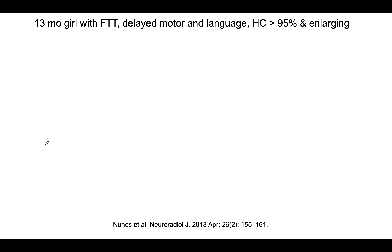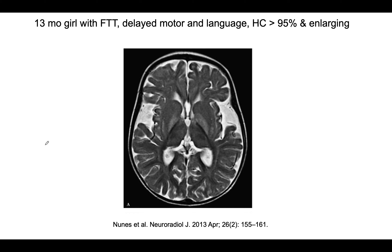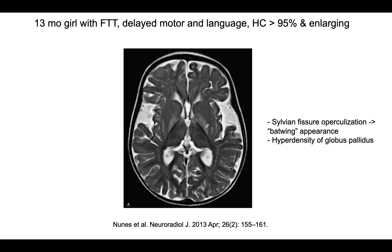As a case, consider a 13-month-old girl with failure to thrive, delayed motor and language skills, and head circumference above the 95th percentile that is noted to be enlarging. The team gets a head MRI. Particularly notable are two findings: opercularization of the sylvian fissures, classically known as the bat wing appearance on MRI, and hyperdensity of the globus pallidus, which is part of the movement center of the brain. These are classic findings for patients with this disorder.